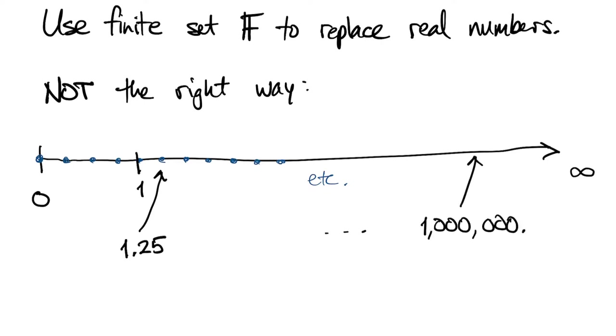Where we run into problems is if you go way out, let's say we look at a million, and then the number after a million is a million.25.